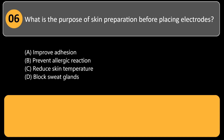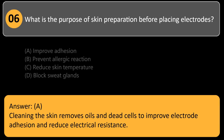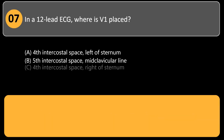What is the purpose of skin preparation before placing electrodes? A. Improve adhesion. B. Prevent allergic reaction. C. Reduce skin temperature. D. Block sweat glands. Answer: A. Cleaning the skin removes oils and dead cells to improve electrode adhesion and reduce electrical resistance.